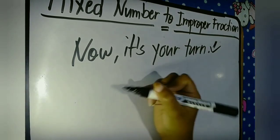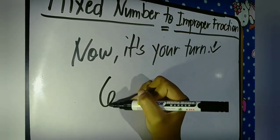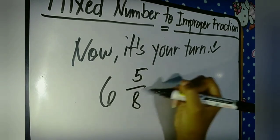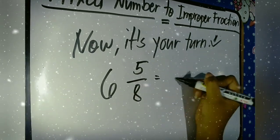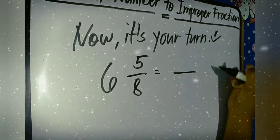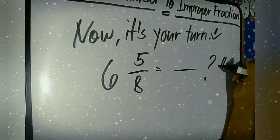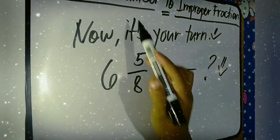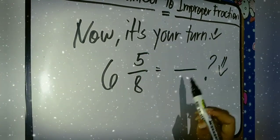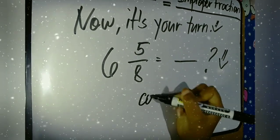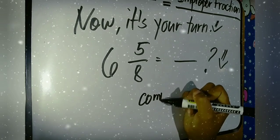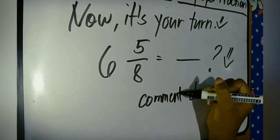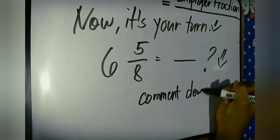Rewrite the mixed number six and five over eight into an improper fraction. If you know the answer, just comment down below. Thank you for watching and good luck!